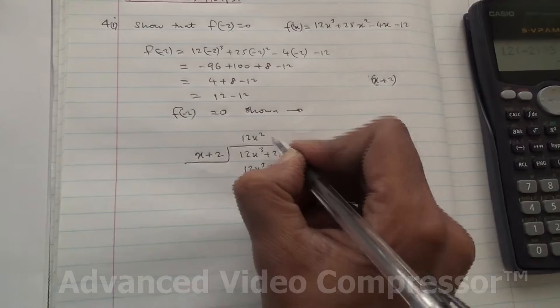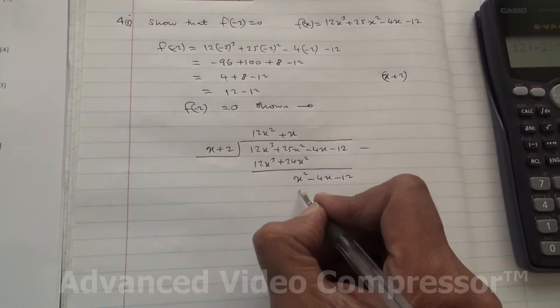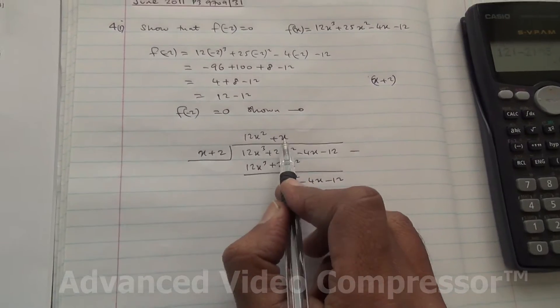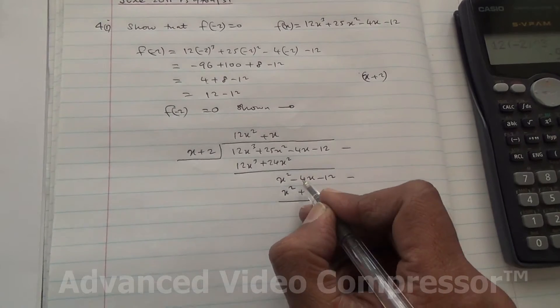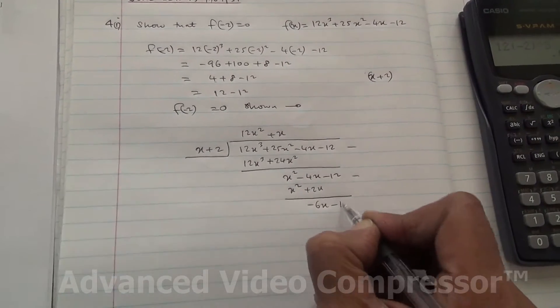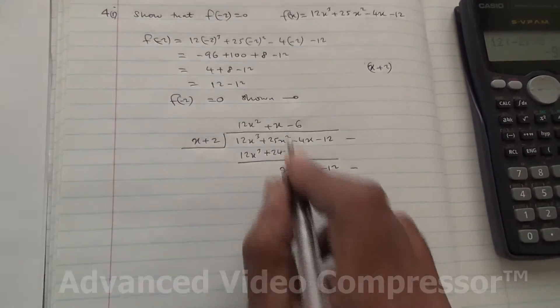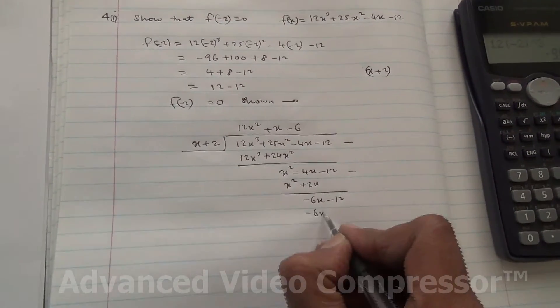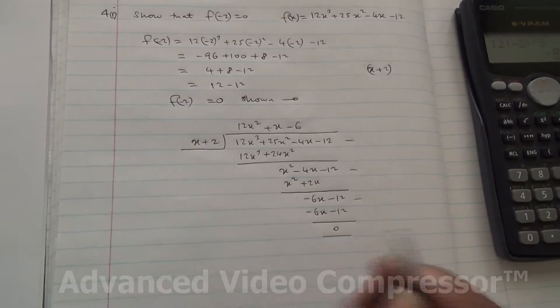x squared over x is going to be x. And therefore, x times x is x squared. And you have got x times 2 is plus 2x. You subtract that. You are going to get -6x minus 12. -6x over x is -6. -6 times x is -6x. -6 times 2 is -12. So you are going to get 12, subtract these. You are going to end up with 0.